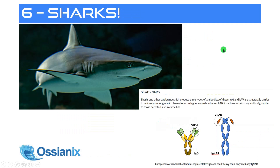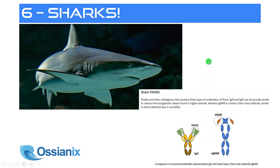Coming back to saying that heavy chain-only antibodies are only found in camelids — I was actually lying. They're also found in sharks. However, they look a lot different. What they're called in sharks is immunoglobulin NARs. If you take the variable part of this heavy chain-only antibody, you also have what's called a VNAR, which is also a single-domain antibody. So from sharks and from camelids, you can derive these single-domain antibodies, which is revolutionary. Based on the shark-derived ones, there's also a company called Oceanics that is busy building upon this technology.